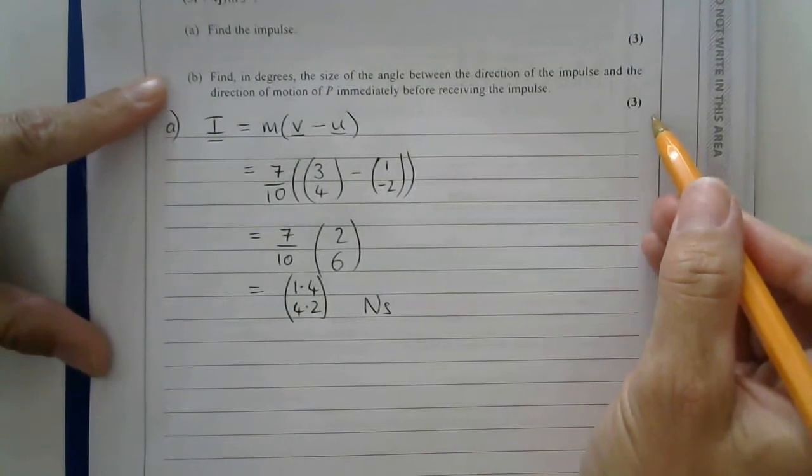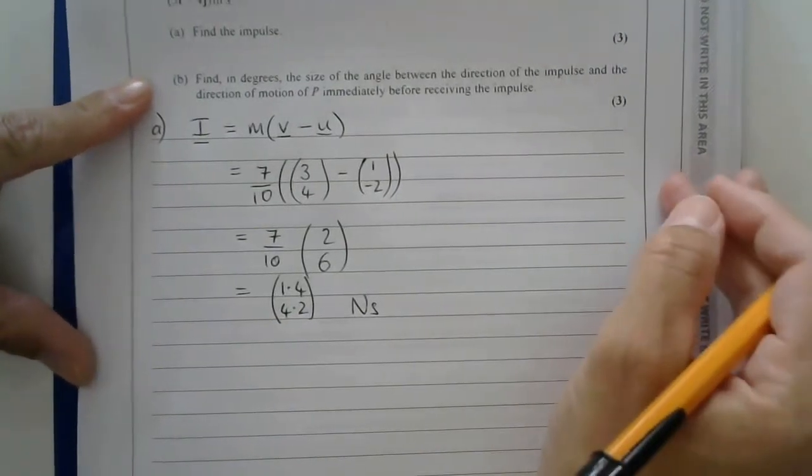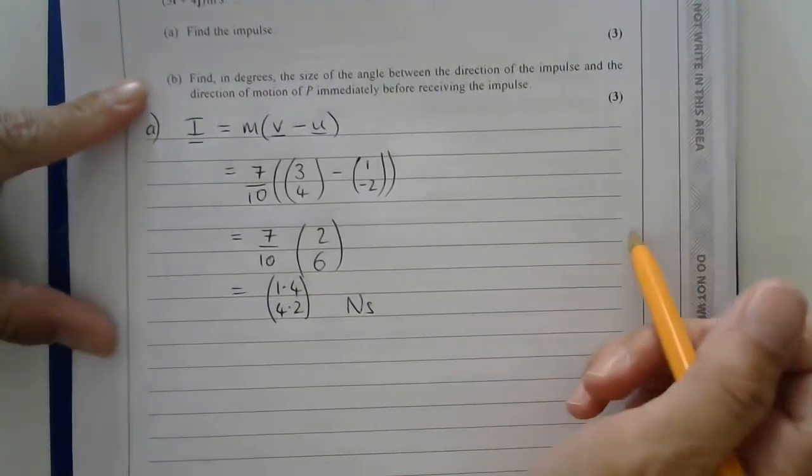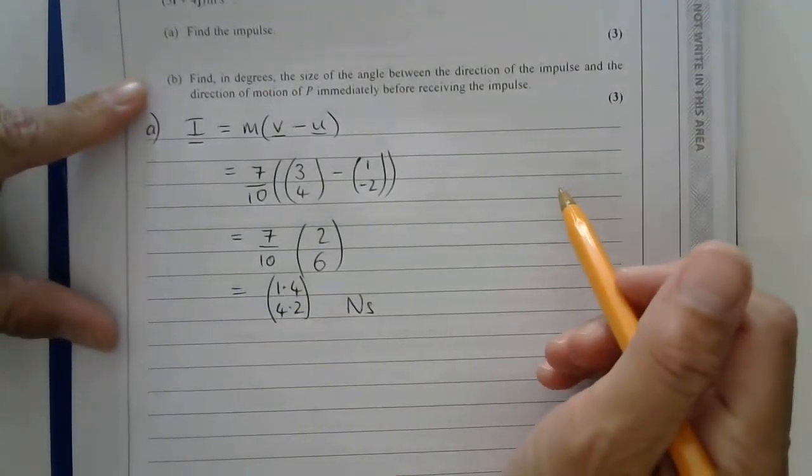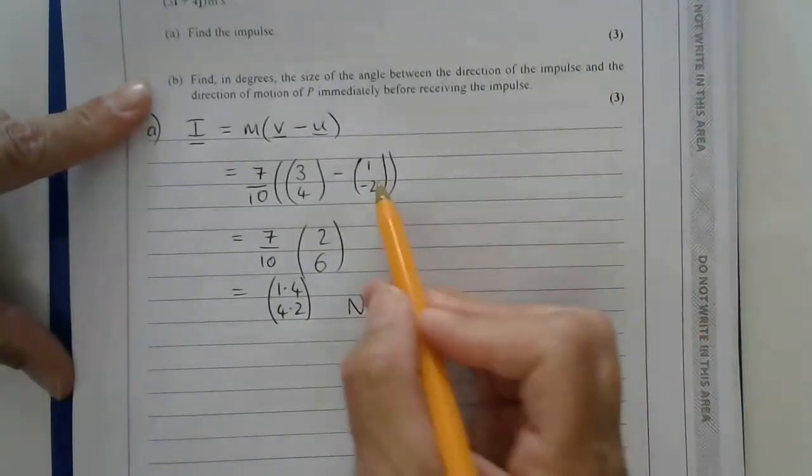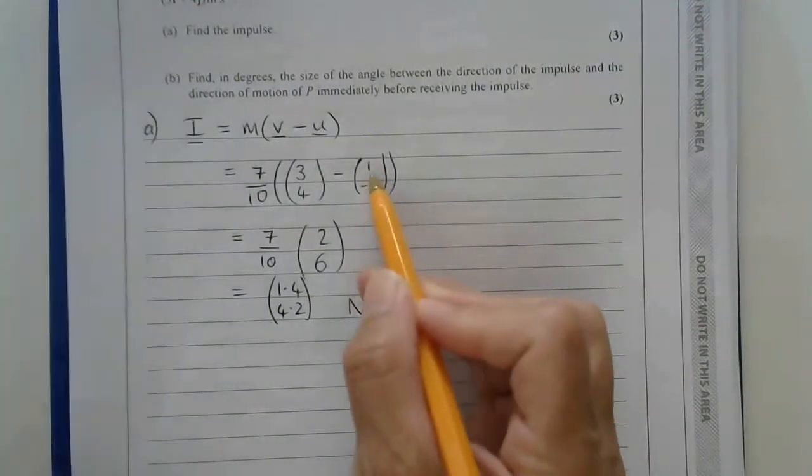Then I'm asked to find in degrees the size of the angle between the direction of the impulse, which will be this, and the direction of motion immediately before receiving the impulse. The direction it was going in before receiving the impulse was this.